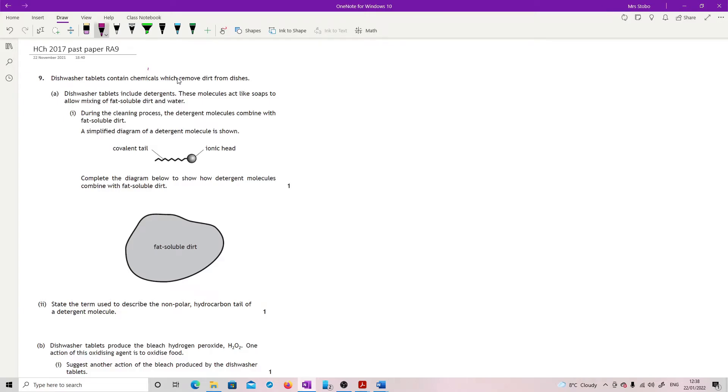Question 9. Dishwasher tablets contain chemicals which remove dirt from dishes. Dishwasher tablets include detergents. These molecules act like soaps to allow mixing of fat soluble dirt and water. During the cleaning process the detergent molecules combine with fat soluble dirt. Complete the diagram below to show how detergent molecules combine with fat soluble dirt.